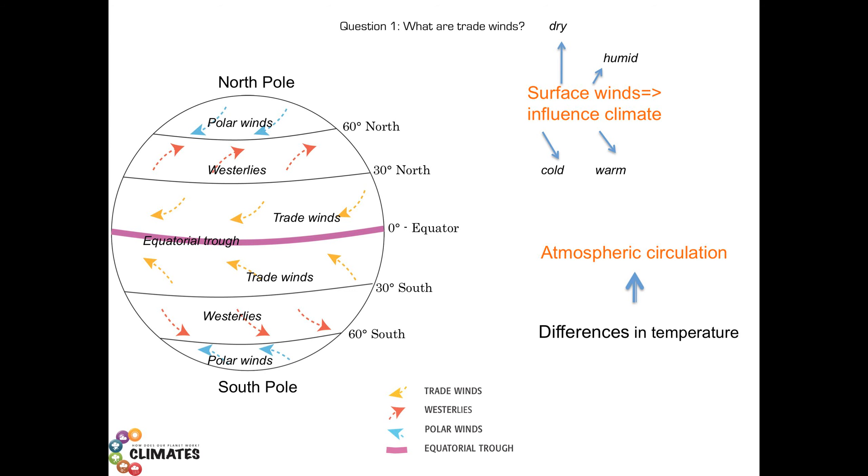Look at the figure on the left. It shows in a simple manner the distribution of the main winds observed on the Earth's surface. Other winds exist and can be added. Here is the North Pole, here the South Pole.